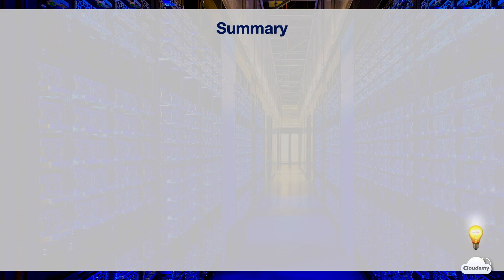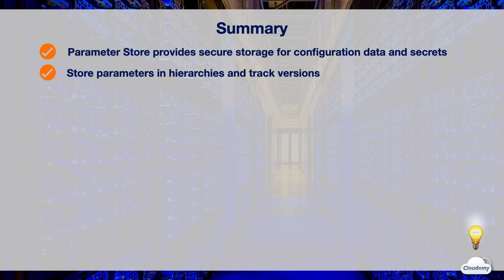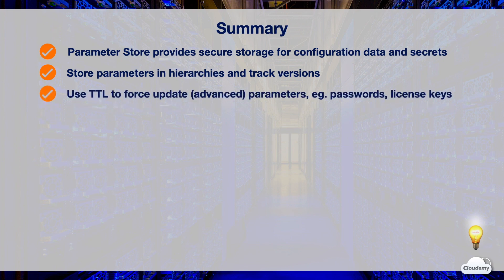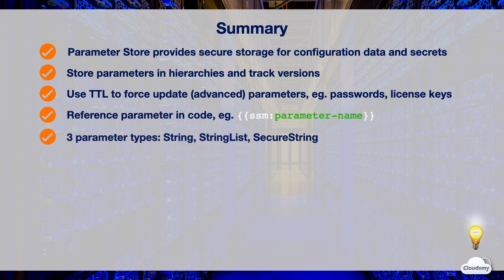In this episode, we've learned about AWS Systems Manager Parameter Store. Parameter Store provides secure storage for configuration data management and secrets management, including plain text and encrypted secrets. It keeps a hierarchical structure, tracks versions, and offers parameter policies for advanced parameters — letting you specify a time to live to force updates to parameters like passwords and license keys. You can securely reference parameters in your application code using double curly braces with SSM and the parameter name. Parameter Store supports three types: String, StringList, and SecureString.